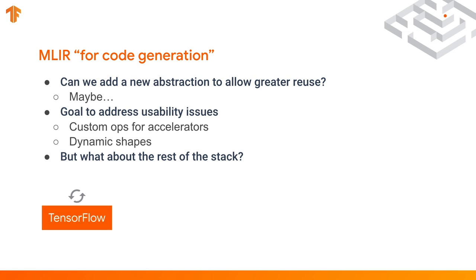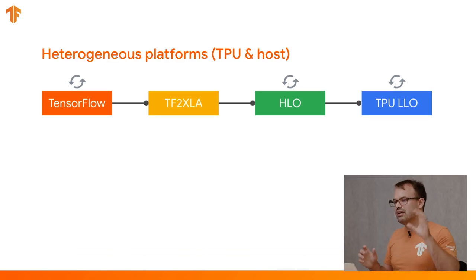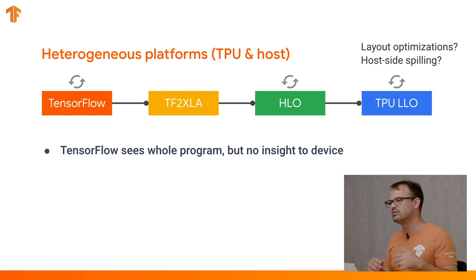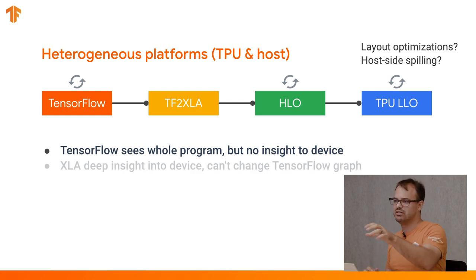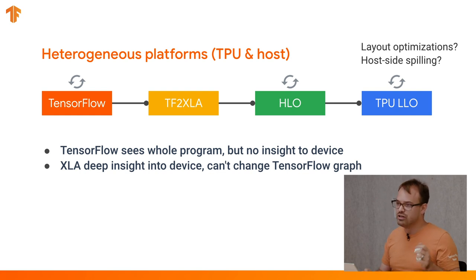We have the TF2 XLA bridge that bridges between TensorFlow ops and HLO. Then on HLO we have different passes — device independent and device dependent — and finally in the backends the emission from HLO to TPU LLO or, in the case of CPU and GPU, LLVM. What we have at the moment is TensorFlow can see the whole program but has no insight on the device. TensorFlow does its optimizations and then marks which parts will run on XLA. XLA, on the other hand, has deep insight into devices and knows how to optimize it, but it can't change the TensorFlow graph — XLA assumes as fixed all its inputs and the graph structure given to it by TensorFlow.